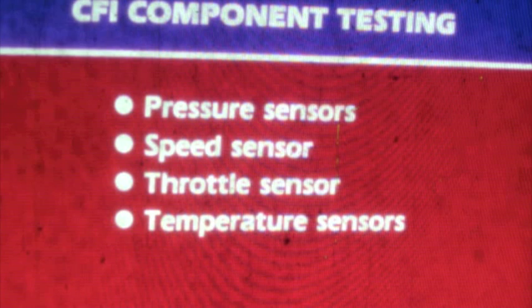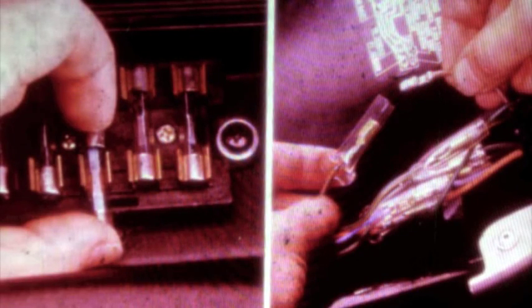Testing CFI components can be divided into four categories: pressure sensor testing, speed sensor testing, throttle sensor testing, and temperature sensor testing. However, before getting into extensive CFI testing, remove the headlamp fuse and disconnect the brown tail lamp wire to reduce battery drain.